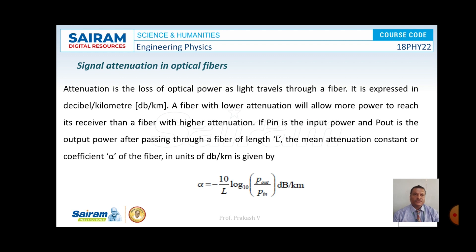A fiber with lower attenuation will allow more power to reach its receiver than a fiber with higher attenuation. If P_in is the input power and P_out is the output power after passing through the optical fiber of length L, the attenuation coefficient alpha is given by: alpha = (−10 / L) × log₁₀(P_out / P_in), in dB per kilometer. Here L is the length of the optical fiber, P_in is the input power coupled into the fiber, and P_out is the output power after traveling distance L.